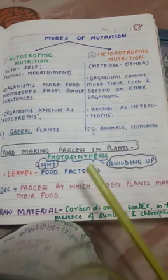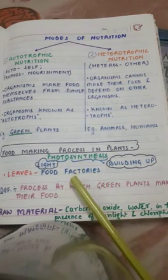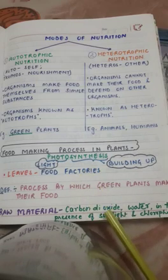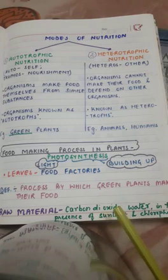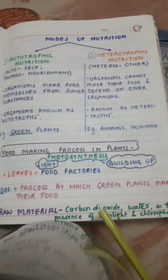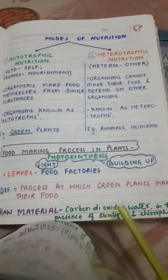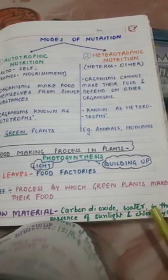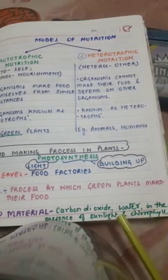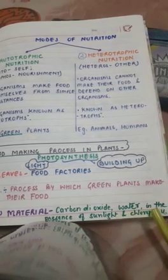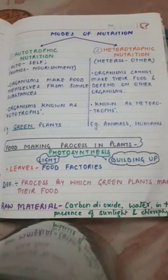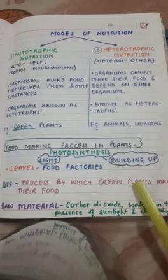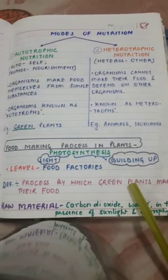The essential raw materials for the photosynthesis process are carbon dioxide and water. The plant prepares food in the presence of sunlight and chlorophyll. The remaining part of photosynthesis will be covered in the next video. Thank you.